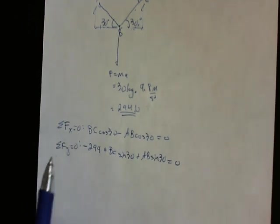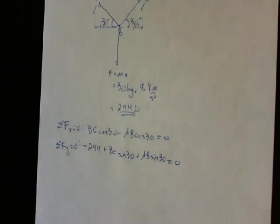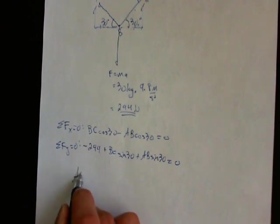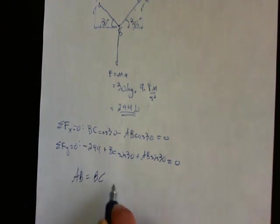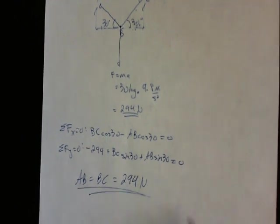So here you have two equations and two variables. To solve for it, just use basic algebra. If you do it correctly, you will get AB equals BC equals 294 newtons. Thank you for watching.